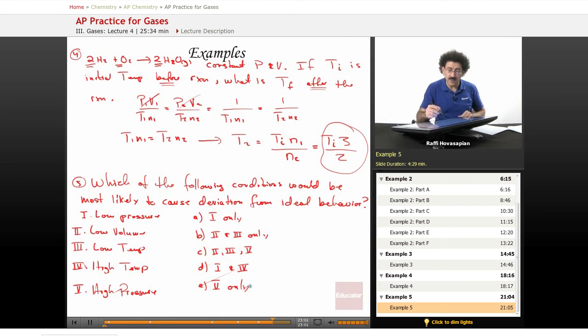So which of the following conditions would be most likely to cause deviation from ideal behavior? Deviation from ideal behavior has to do with high pressure or low temperature, which causes the volume to be small. So a small volume, high pressure, and low temperature tend to induce deviant behavior.